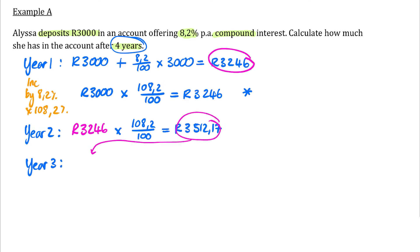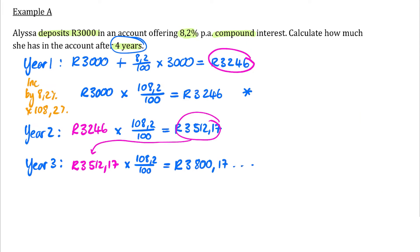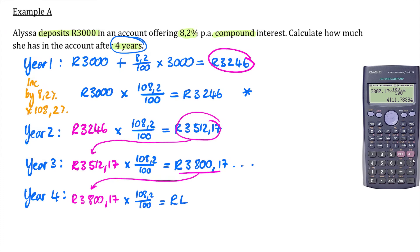In year three we bring forward R3,512.17 and multiply by 108.2% — we want every fraction of a cent earning interest. Our calculator gives approximately R3,800. Finally, in year four that balance becomes our opening balance, we multiply by 108.2% one more time, and we find that at the end of four years Alyssa has R4,111.78 in her account.